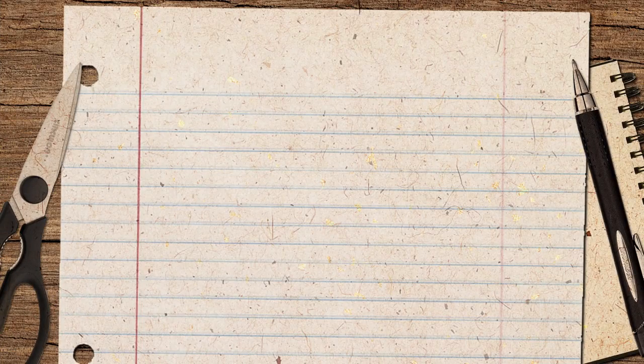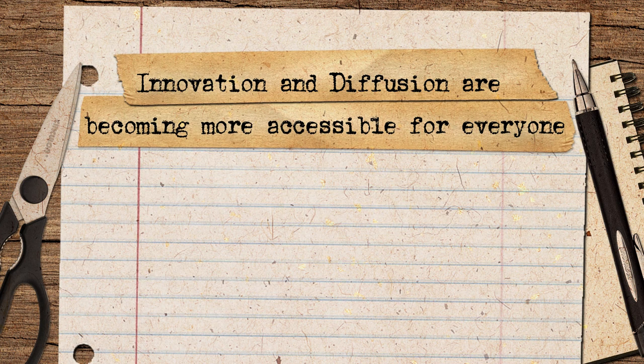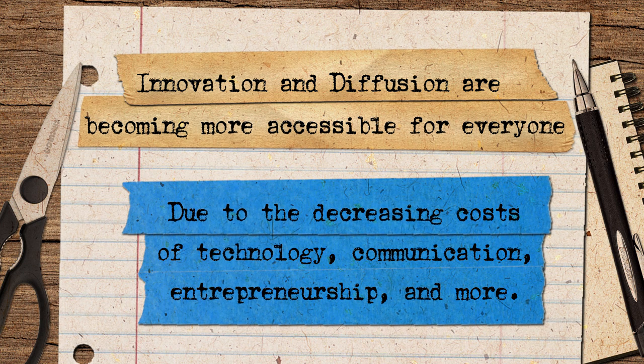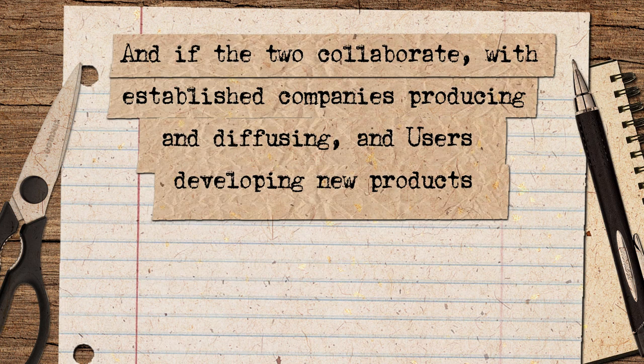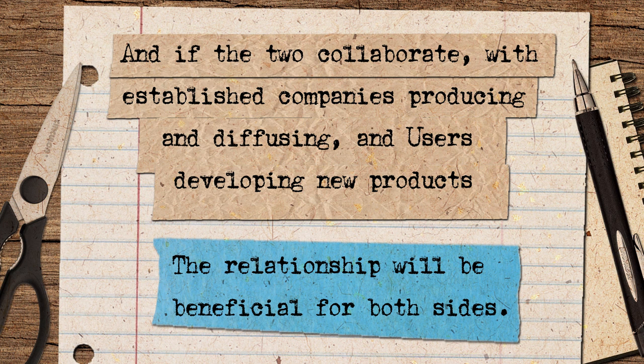So what have we learned here today? Innovation and diffusion are becoming more accessible for everyone, due to the decreasing costs of technology, communication, and entrepreneurship. Established companies sometimes contribute by enabling user innovators instead of seeing them as rivals. And if the two collaborate — with established companies producing and diffusing, and users developing new products — the relationship will be beneficial for both sides. If the future is about more and more people innovating, collaborating, becoming entrepreneurs and better ideas helping us all change the world — what are you waiting for?